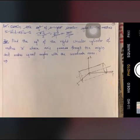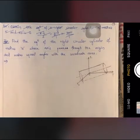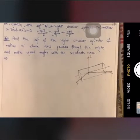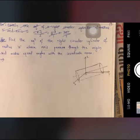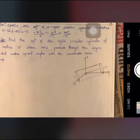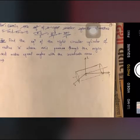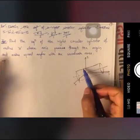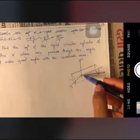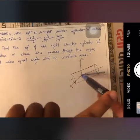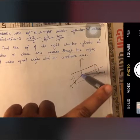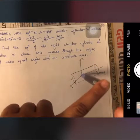Let's see one more example: a right circular cylinder of radius A whose axis passes through the origin and makes equal angles with the coordinate axes. The axis is passing through the origin, and surrounding it there is a cylindrical surface generated by a generator.